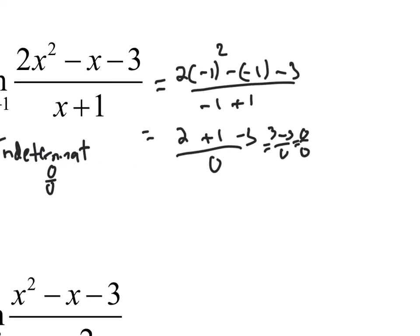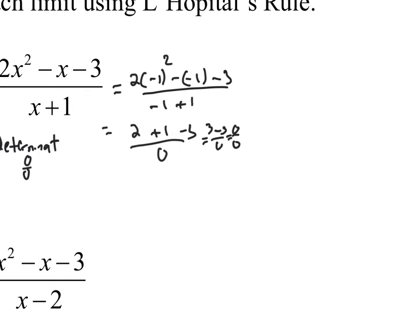I'm going to erase the equal sign, because one year the College Board said don't let them write 'equals 0 over 0.' It's not really true because 0 over 0 doesn't mean anything. So I'm going to put an arrow — 0 over 0 — since it's not really equal to 0 over 0.